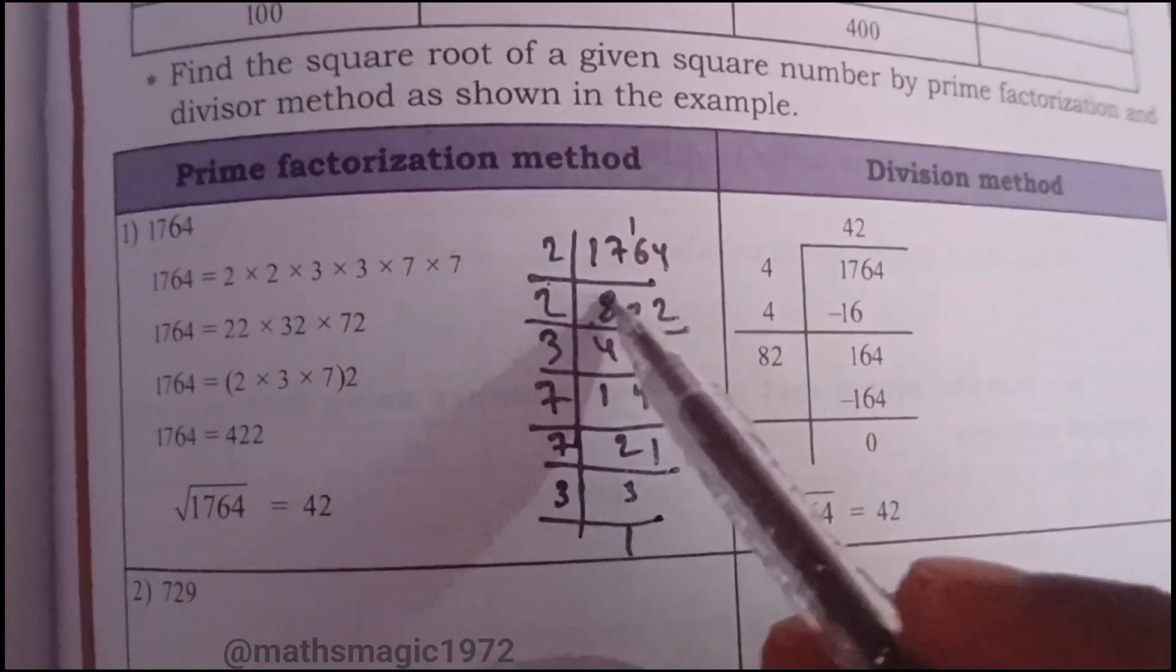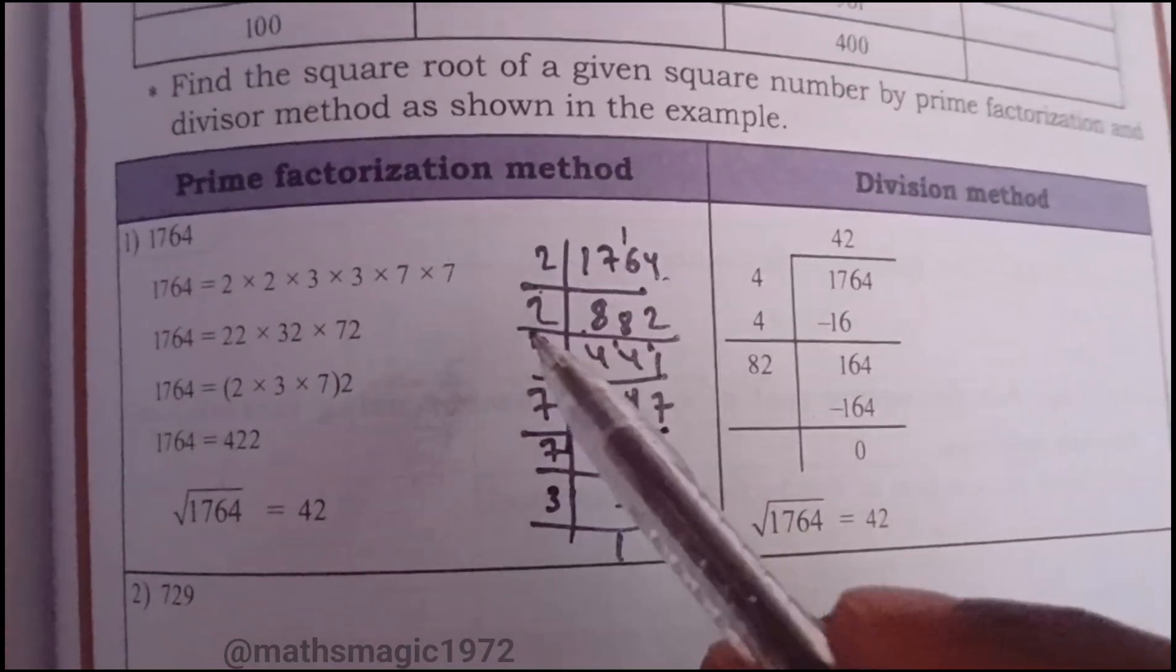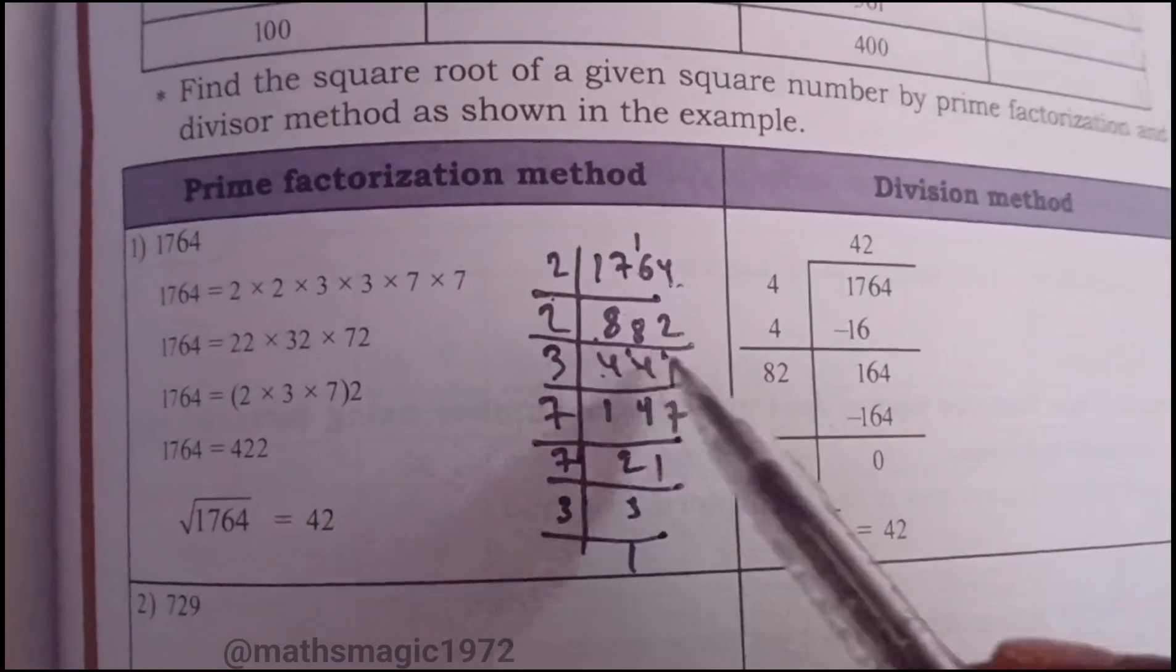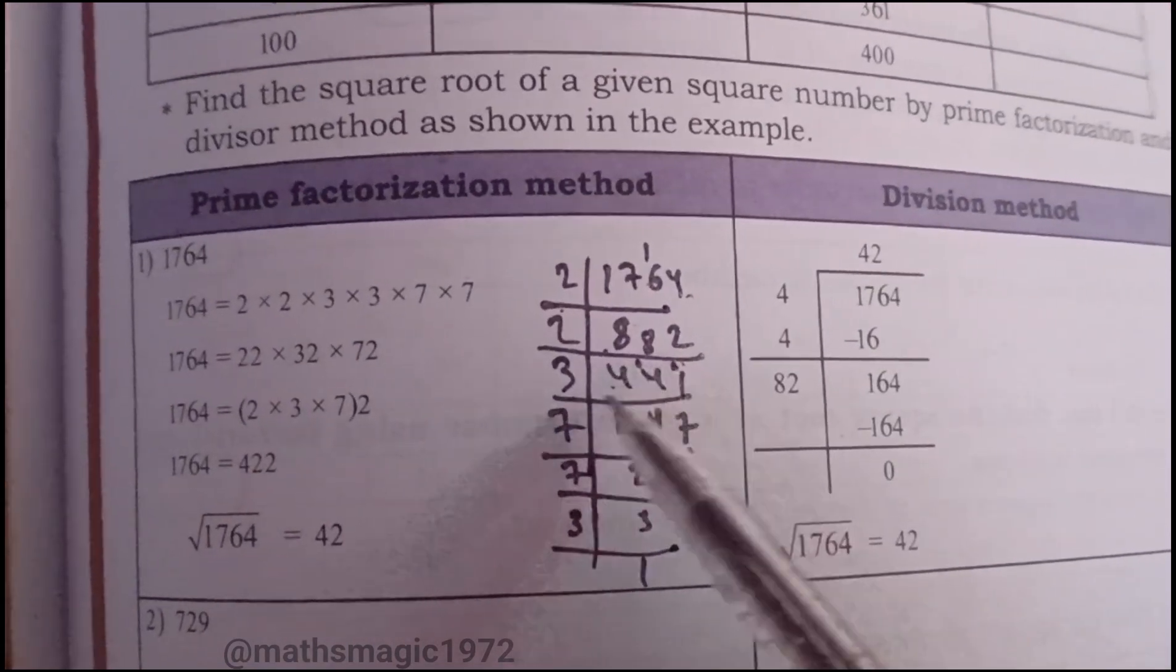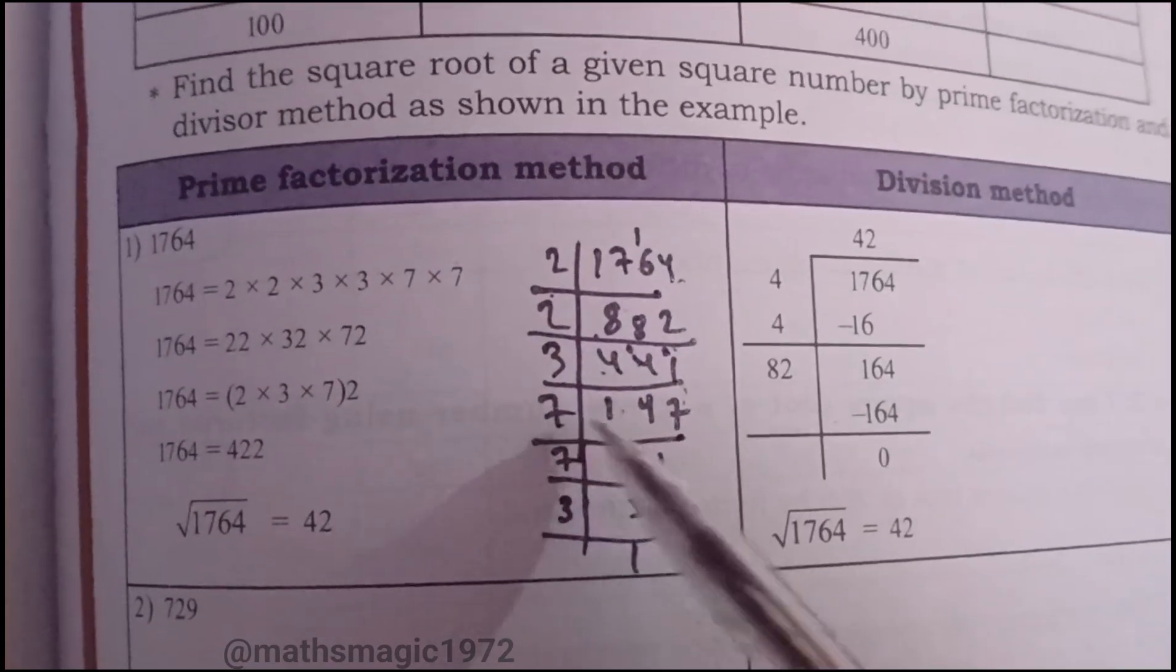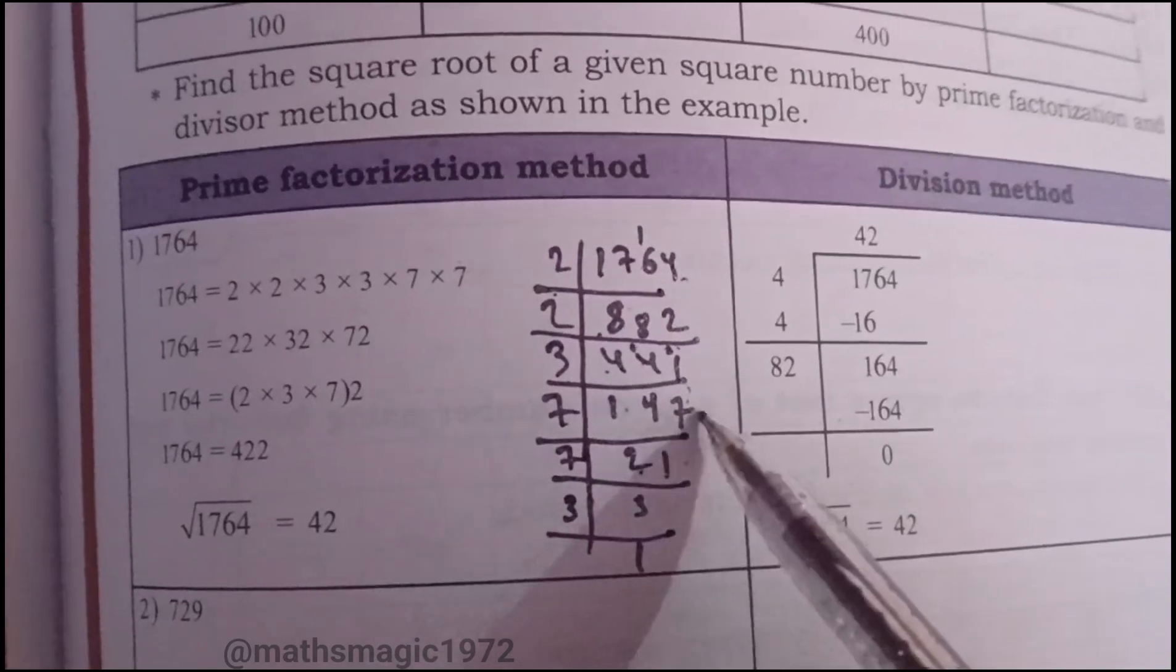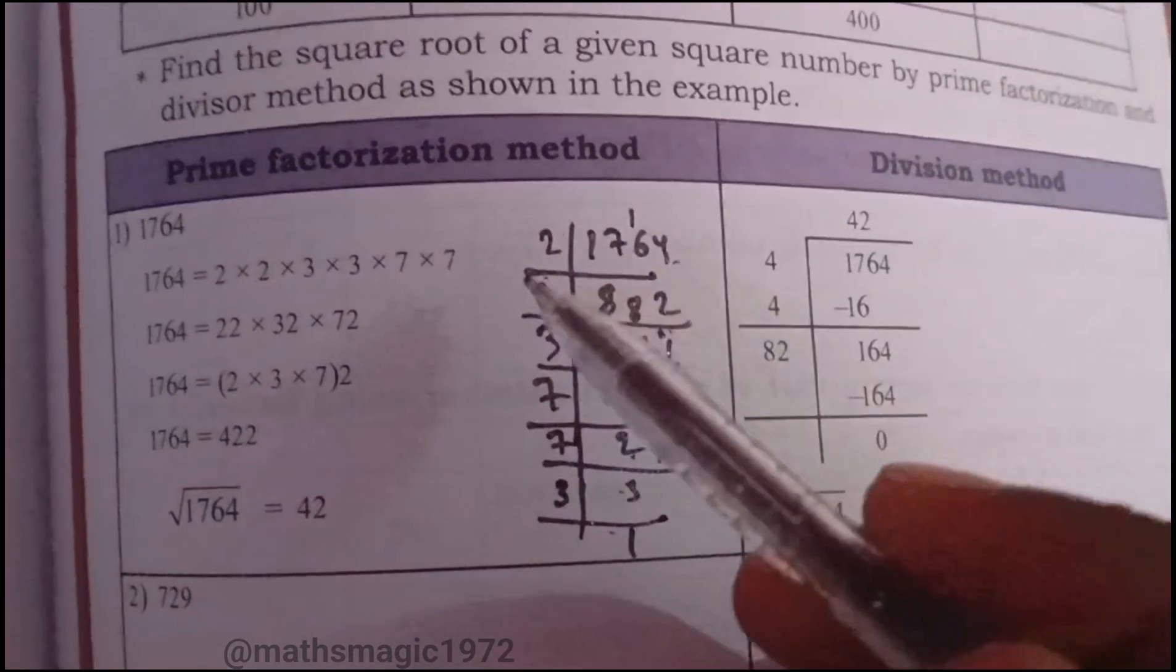2 into 1764 is 882. 2 into 882 is 441. 2 into 441, 2 twos are 4, 2 fours are 8. 3 into 441, 3 ones are 3, 3 fours are 12 carry 1, 3 fours are 12, we get 147. 7 into 147, 7 twos are 14, 7 twos are 14, 7 threes are 21.